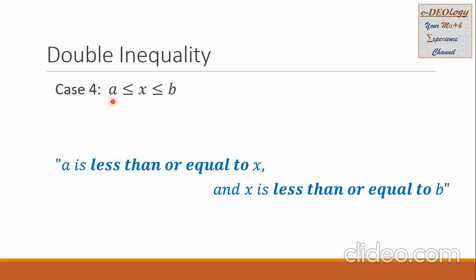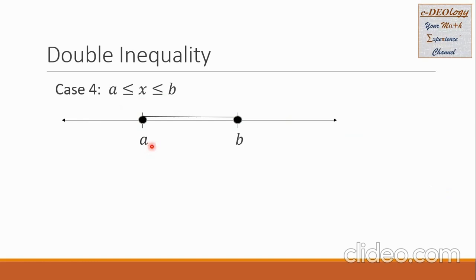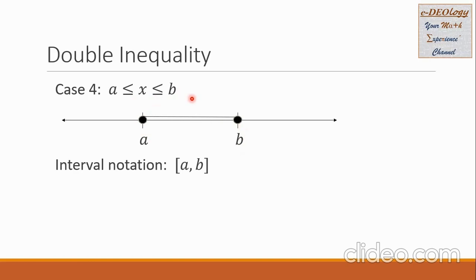Case 4: a is less than or equal to x and x is less than or equal to b. On the number line, we place the numbers making sure that a is on the left side as the lower number. We connect the two numbers. The members of the solution set are between a and b. We put a solid dot on a because a is part of the solution set, and also on b because b is part of the solution set. For the interval notation, we use square brackets for both sides, because a and b are both parts of the solution set.